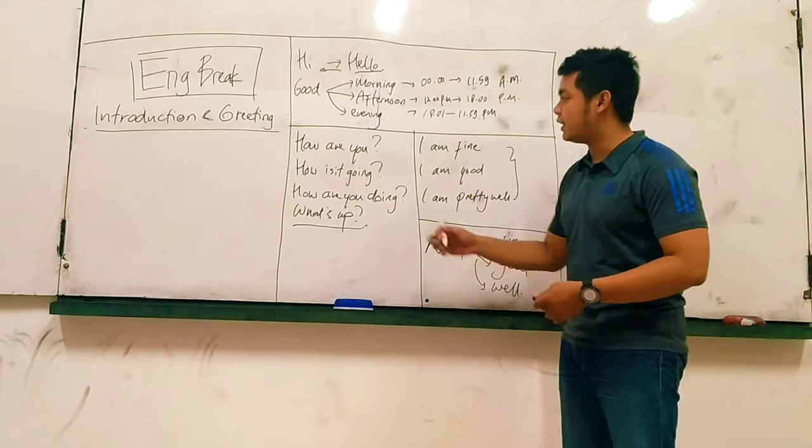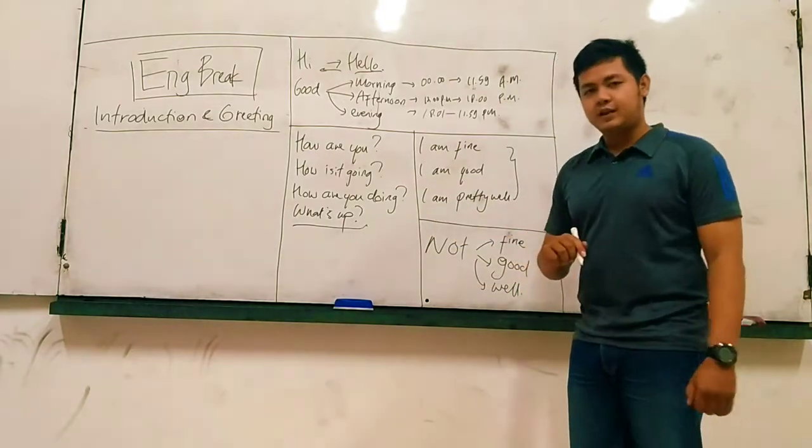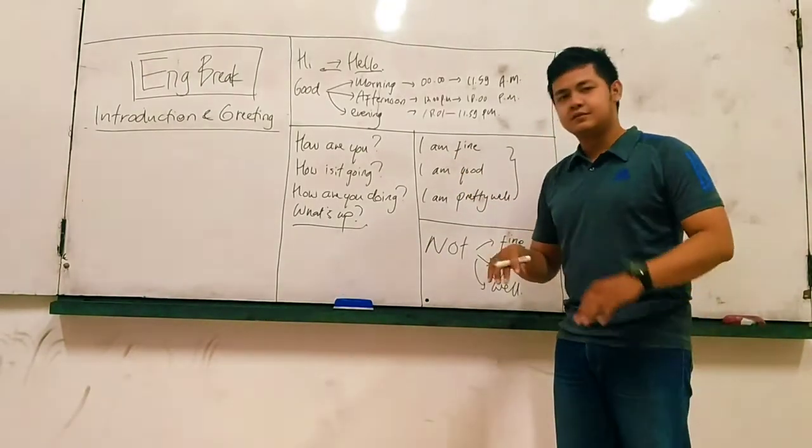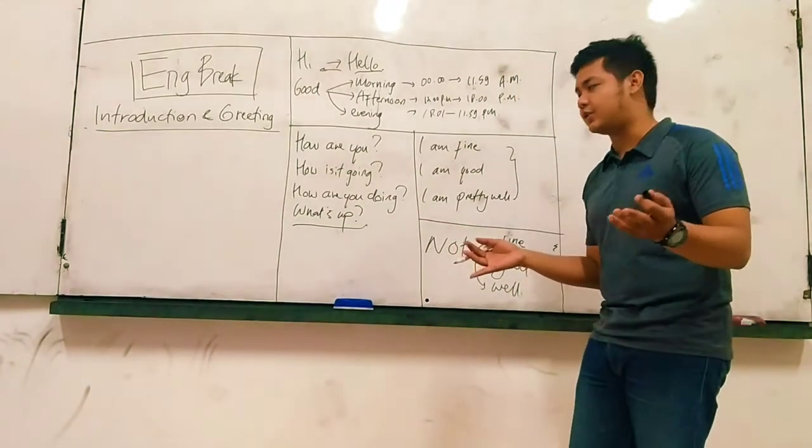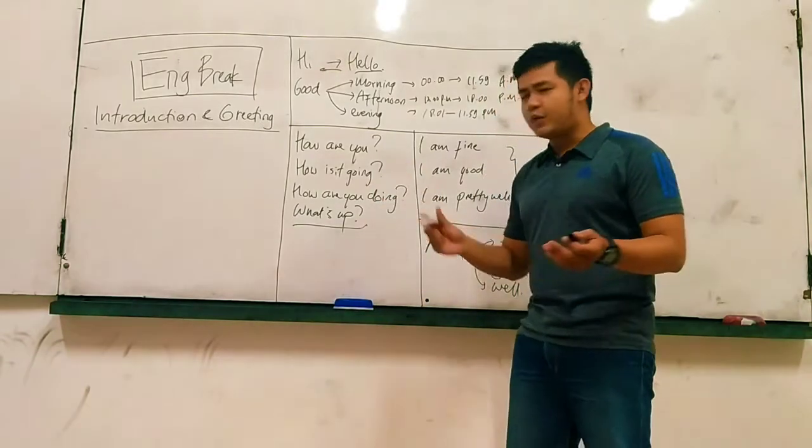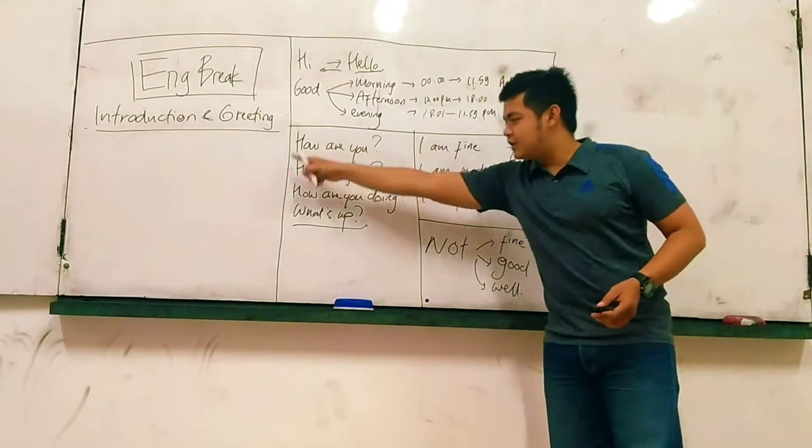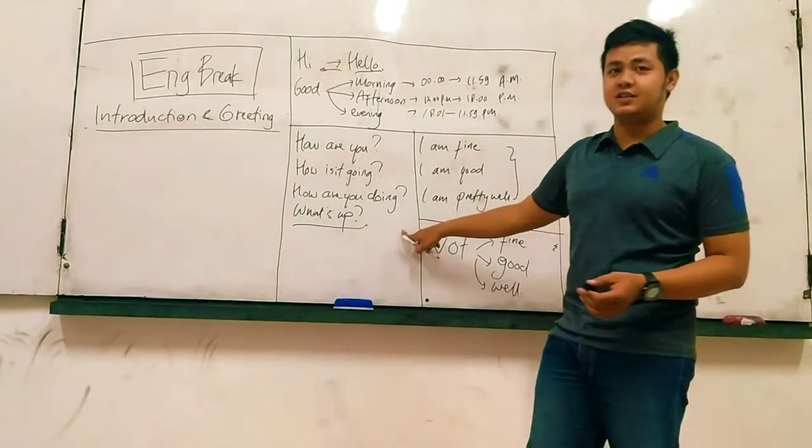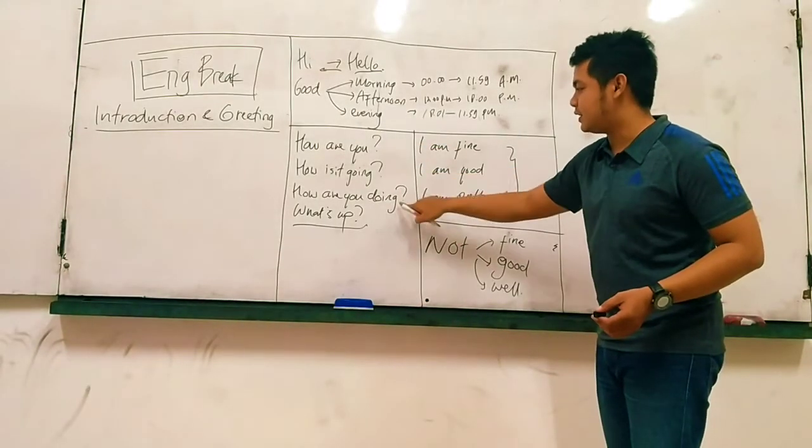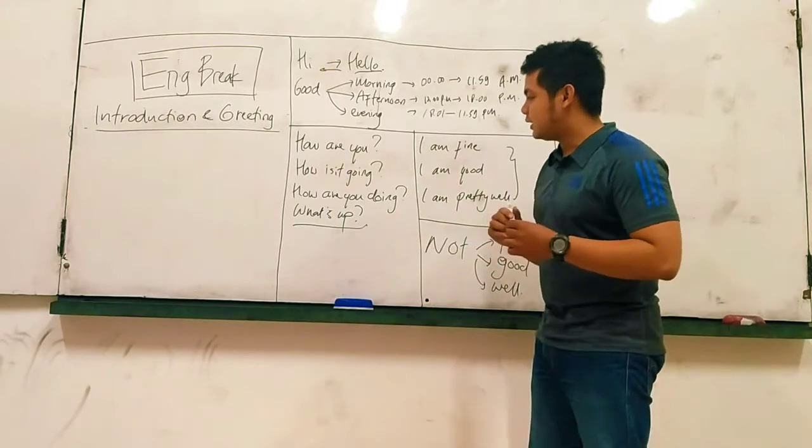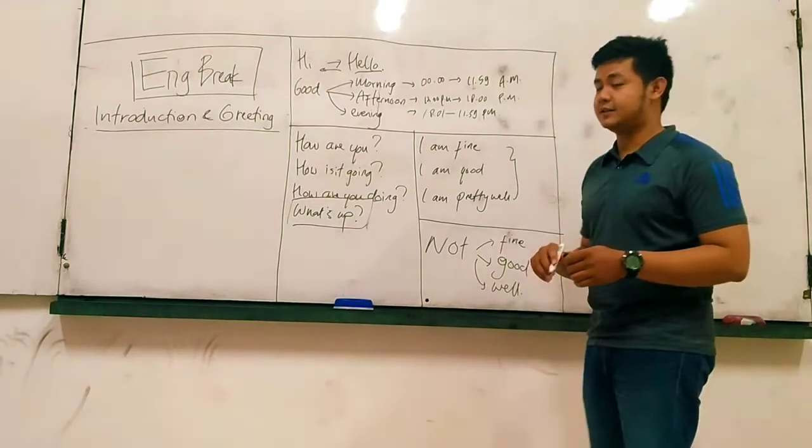For example, here we have how are you, how is it going, how are you doing, and the most casual thing here is what's up. Like what's up brother, what's up sister, or maybe how are you today, how is it going today, how are you doing now. And this actually the question for asking their conditions. You may use this, this and this, this is actually the same. But this one is for a casual thing.